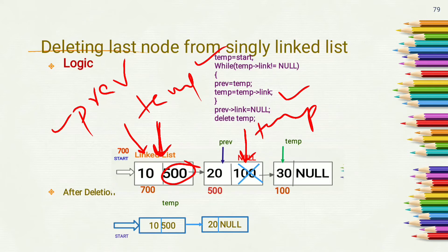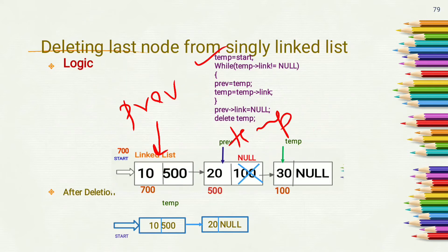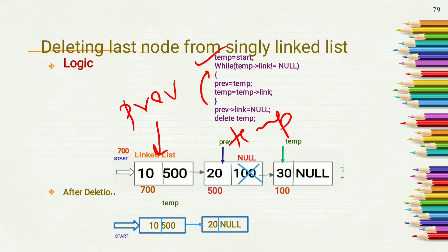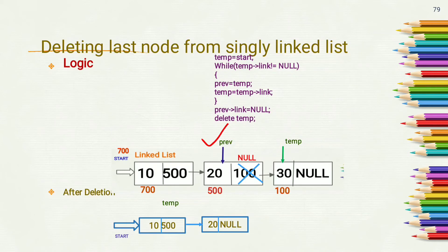Now previous is at the first node and temp is at the second node. The loop repeats and we check whether temp->link is not equal to null. Yes, because temp->link contains 100, which is not equal to null. So we set previous equal to temp, and move temp to temp->link which equals 100, so temp moves to address 100. Now previous is at the second node and temp is at the third node.